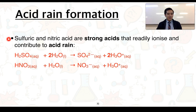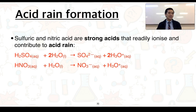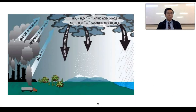Based on these two equations, sulfuric acid and nitric acid being strong acids are readily ionized and therefore contribute to acid rain, given by these equations. We've shown this with a single arrow to indicate that the reaction essentially goes to completion. This diagram just summarizes some of those processes.